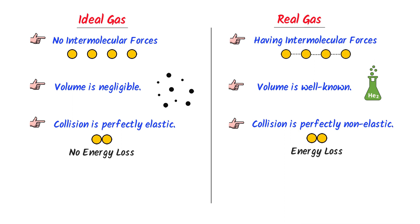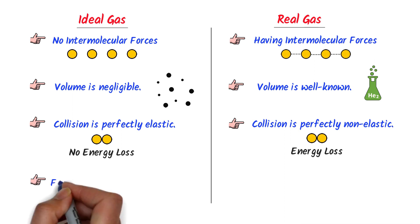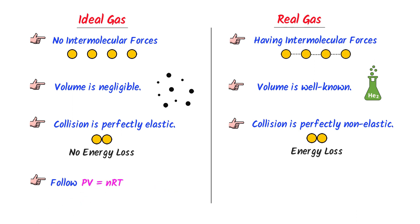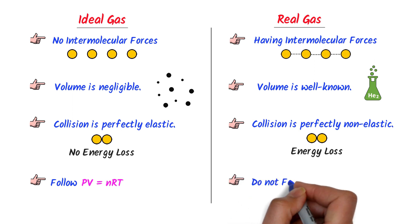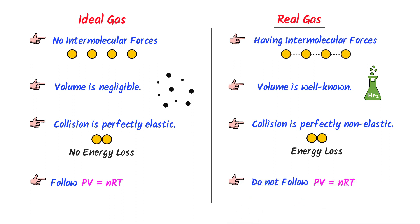Fourthly, in ideal gas, the gas molecules follow the ideal gas equation PV = NRT. While in real gas, the gas molecules do not follow the ideal gas equation PV = NRT. Thus, these are the main differences between real gas and ideal gas.